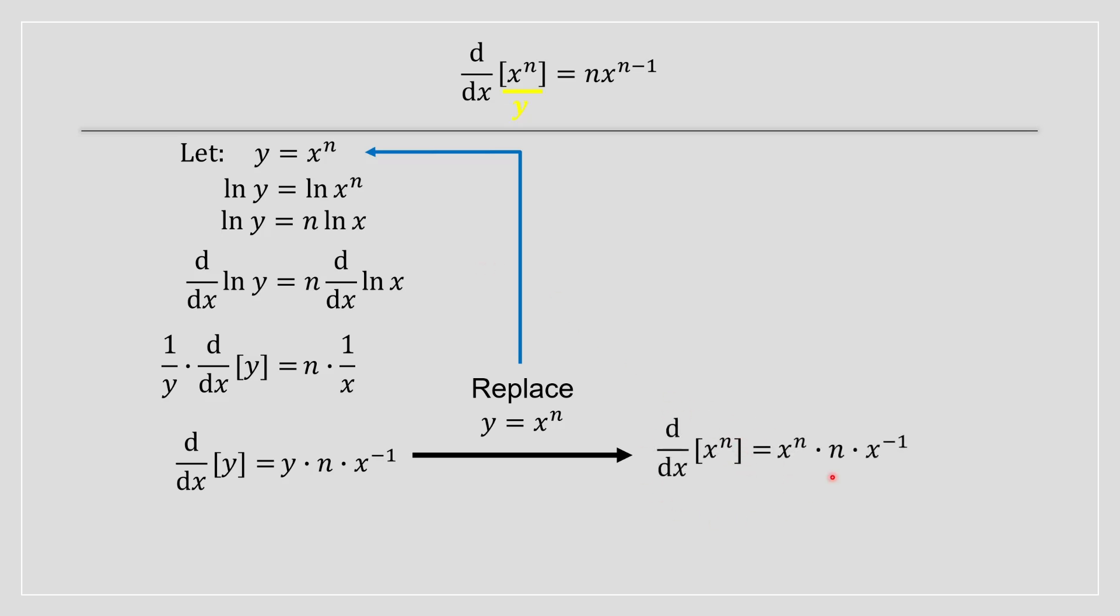We have an expression that looks like this, and there's only one step remaining: we have x to the power of n multiplied by x to the power of negative 1.